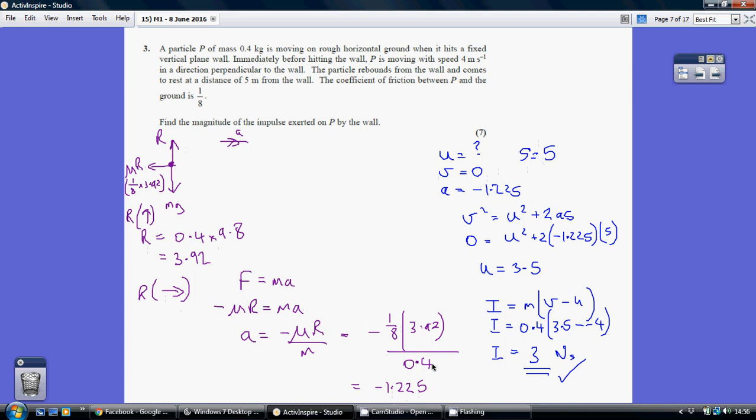And I know my deceleration is minus 1.225, which is what I've just worked out. So using the SUVAT equation, V squared equals U squared plus 2AS, I can solve this to work out that U is 3.5.